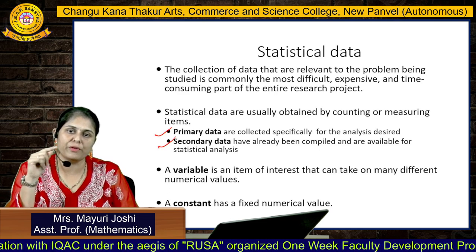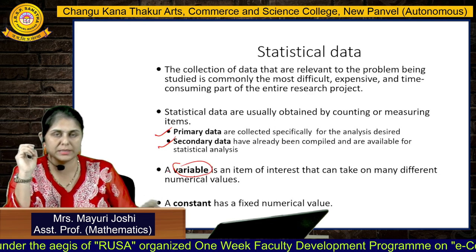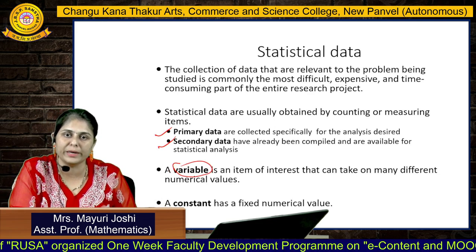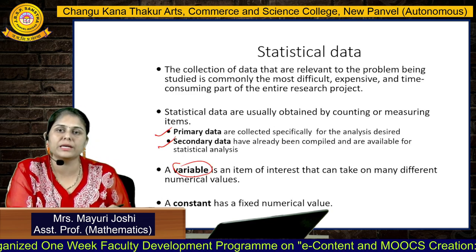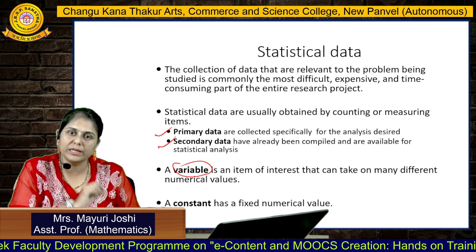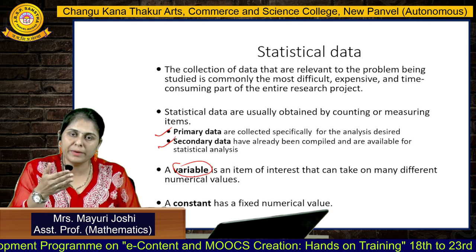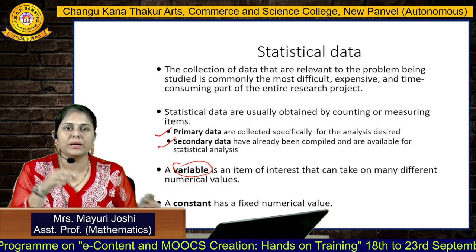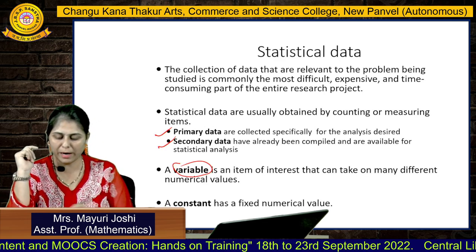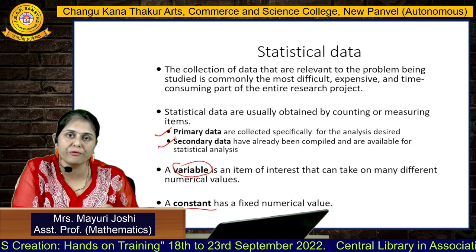Each data is defined in terms of variables. A variable is a characteristic of interest that can take many or different numerical values. For example, the number of people looking at my screen is a variable — it can vary from time to time. Similarly, the number of people subscribing to this channel is also a variable. A constant, on the other hand, is a fixed value.